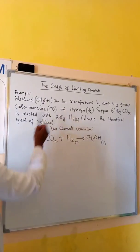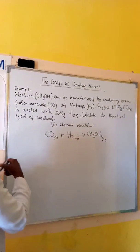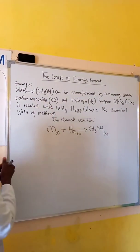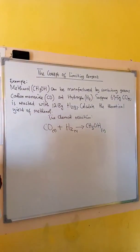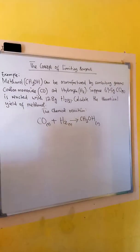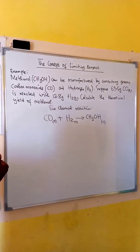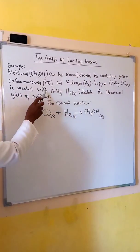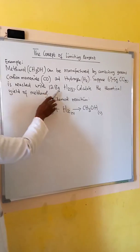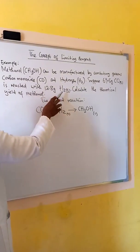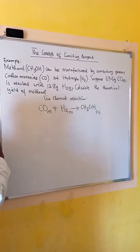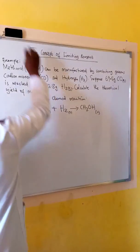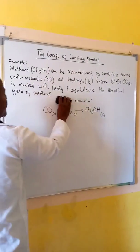Methanol can be manufactured by combining gases carbon monoxide and hydrogen. Suppose 69.5 grams of carbon monoxide reacted with 12.8 grams of hydrogen. We need to calculate the theoretical yield. This is the chemical equation.